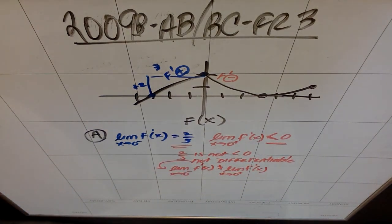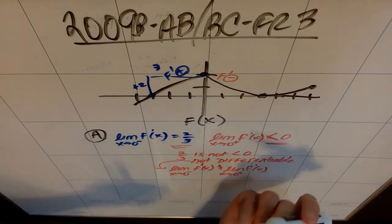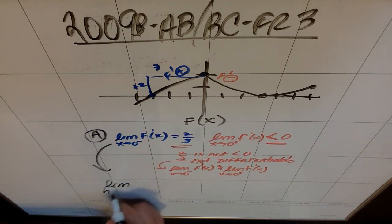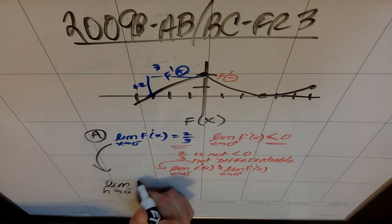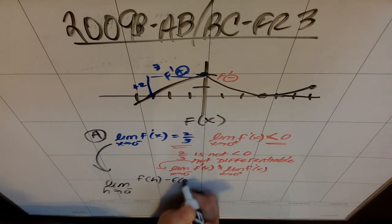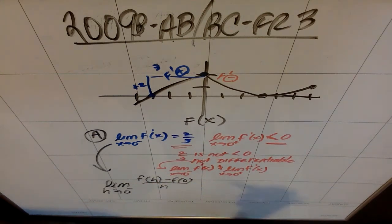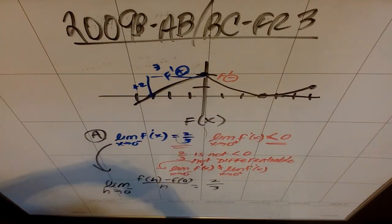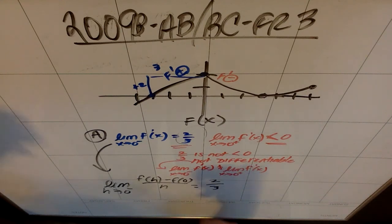The AP actually gives you credit for setting up this as a difference quotient. They wanted you to set it up as the limit as h approaches 0 from the negative of f of h minus f of 0 over h, and show that equals two-thirds by doing rise over run. Understanding that derivative is the same as slope for something linear would certainly earn credit.